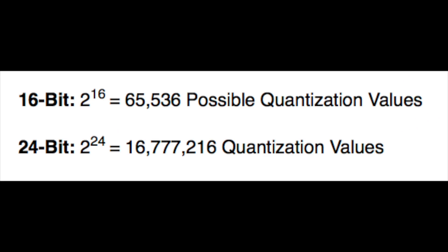So when we look at these two equations, you can easily determine that the 24 bit audio is going to be a much more accurate representation of the analog signal. But there's even more equation fun, so let's keep going.